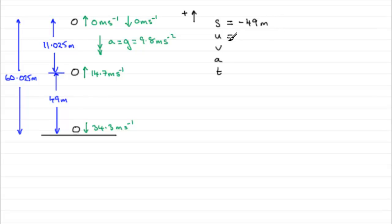What's U? Well, U is plus 14.7, so we'll do 14.7 there, meters per second. V, take care here. V down here is minus 34.3. Because upwards is positive, this is acting downwards, so that's minus 34.3 meters per second.